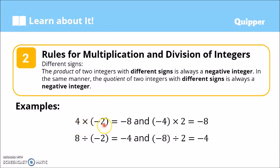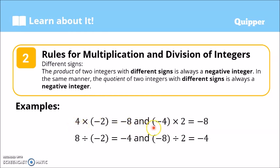Let's have an example: 4 times negative 2. We have a positive integer times a negative integer — different signs — so the answer is negative. 4 times 2 is 8, so the answer is negative 8. And if we have negative 4 times 2, the negative comes first, then we multiply by a positive integer. Negative times positive, different signs, so the answer is negative. 4 times 2 is 8, so the answer is again negative 8.